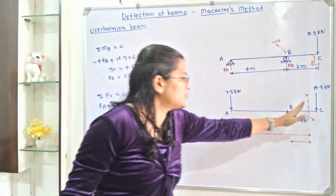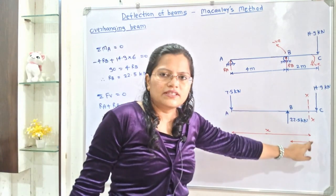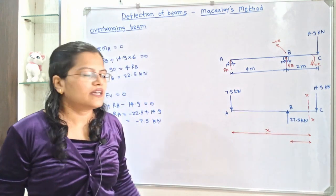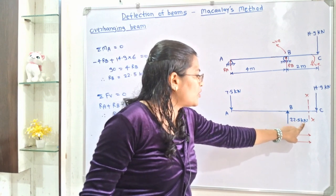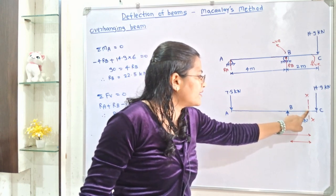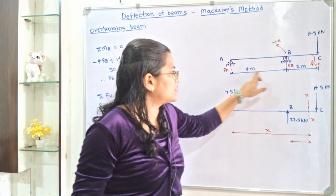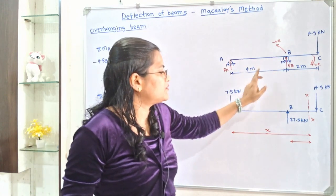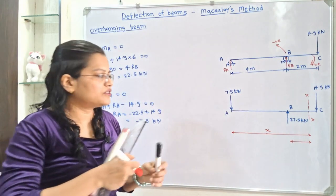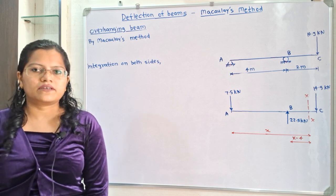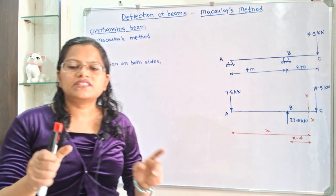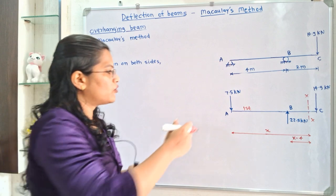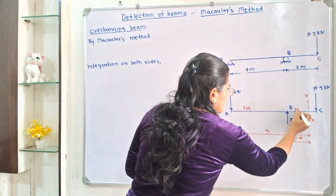We consider the forces on the left-hand side of section XX. The first force has distance x from XX. The second force is 22.5 kilonewton at point B. From section XX to A the distance is x, and A to B is 4, so the remaining distance is x minus 4. The path between the first two point loads is the first part, and the path BC is the second part.